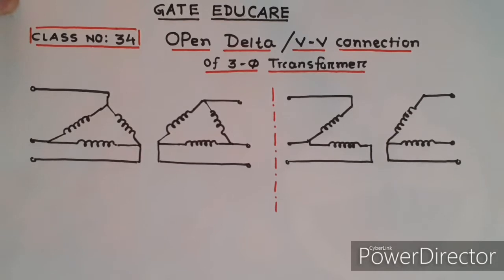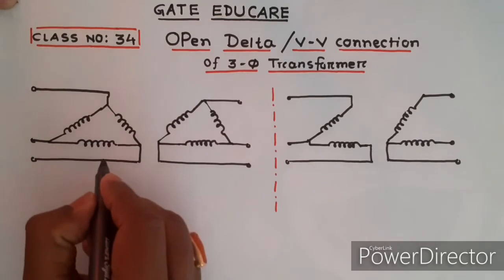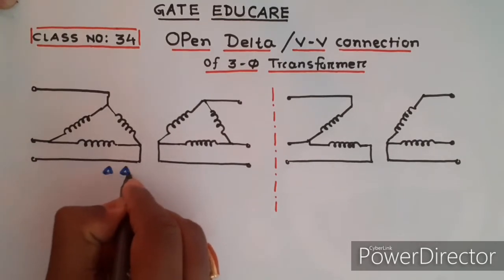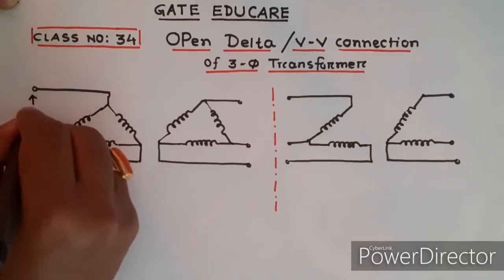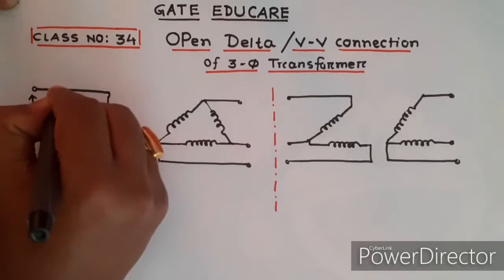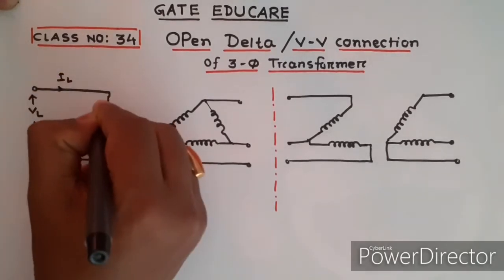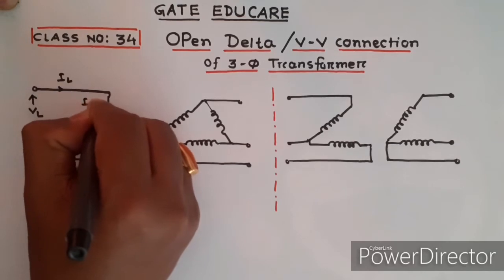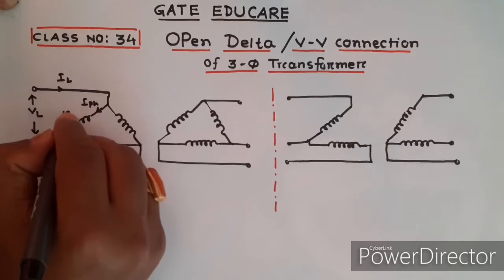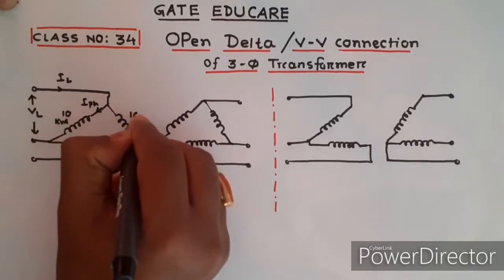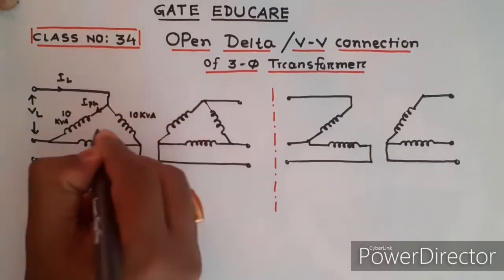Welcome to 'Get It Together.' In this tutorial, the open delta or V-V connection of a three-phase transformer will be explained. Suppose a three-phase bank system is operating in a delta-delta configuration, where VL is the line voltage, IL is the line current, and I-phase is the phase current. The rating of the three individual transformers is 10 kVA, 10 kVA, and 10 kVA.